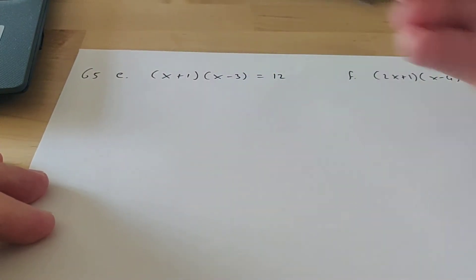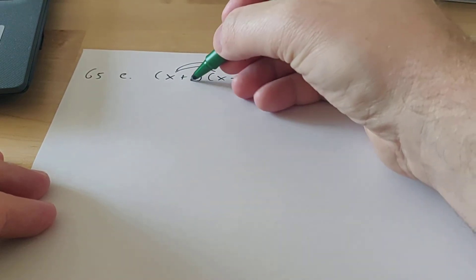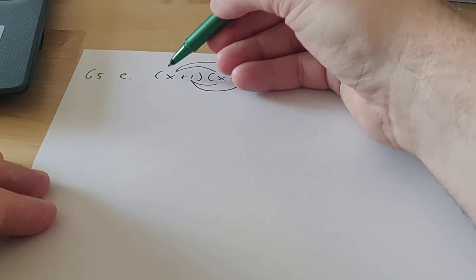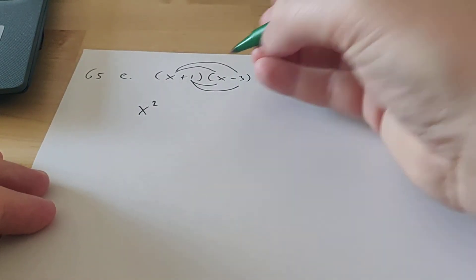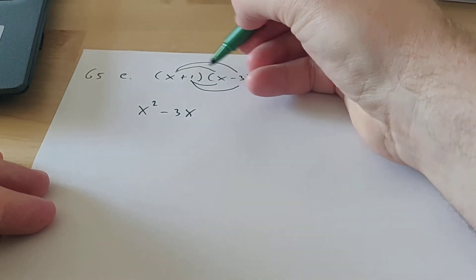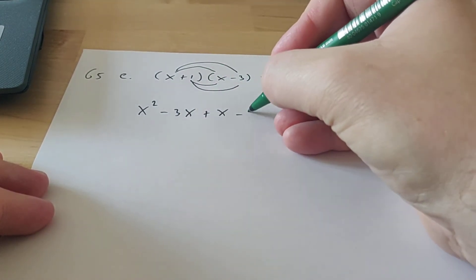So you have to do x times x, x times 3, 1 times x, and 1 times 3. So this is what you get. x times x is x squared, x times minus 3 is minus 3x, x times 1 is plus 1x, and 1 times minus 3 is minus 3.